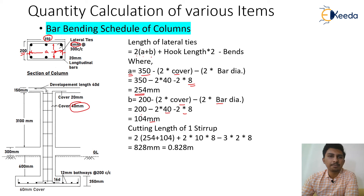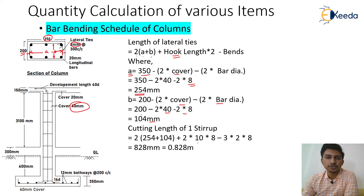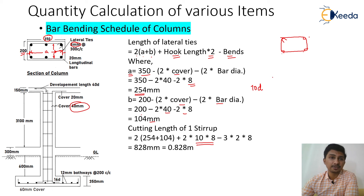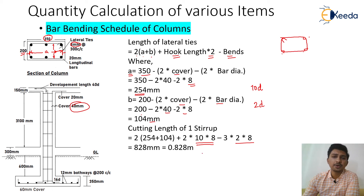The bend is 135 degrees and the hook length provided is 10d, multiplied by 2 for both hooks. The reinforcement is bent three times at 90 degrees, so we deduct 3 × 2d for those bends (standard 90-degree bend deduction). Substituting all values, the cutting length of each lateral tie comes to 0.828 m.